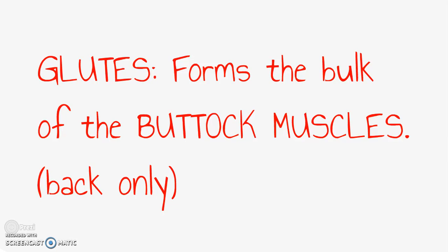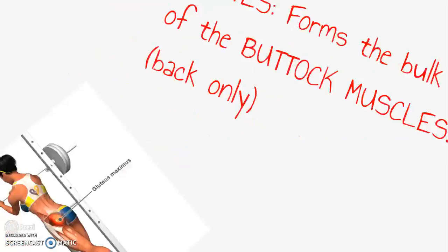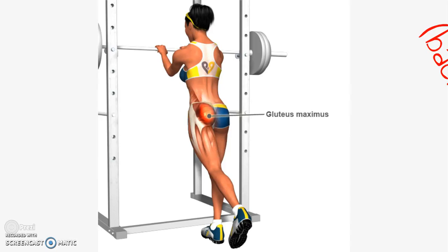The glutes are the muscles that form the bulk of the buttocks muscles. Most of us have heard of gluteus maximus, but there is also gluteus medius and gluteus minimus. Obviously, the glutes are only seen from the back view. These are sometimes called hip extensions or reverse leg lifts. You could also do this same exercise just lying on your stomach. A lot of people like doing squats to work the glutes too.